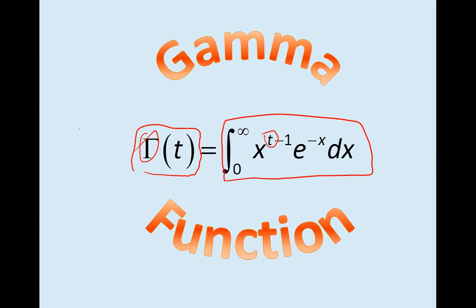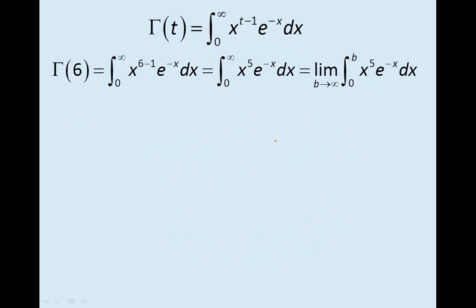Let's see how we would evaluate the gamma function for some positive integer. We're just going to plug in for t. Let's say gamma of 6. Notice that what I do is, in place of t, I put the 6, and then we have this integral, which is an improper integral, and the way that we deal with that is to rewrite it as a limit.